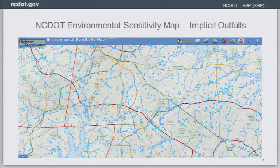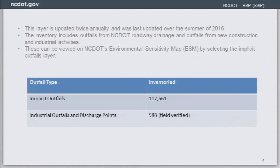The implicit outfall layer is developed by taking a road layer and the 24K stream layer, then placing a point wherever they cross. That crossing point implies at least one outfall typically exists there. Over 100,000 implicit outfalls have been identified through this process, plus field-truthed industrial outfalls. This layer is updated twice a year each time the road layer is updated, and it includes outfalls from new roadways and facilities, viewable by the public on the ESM site.